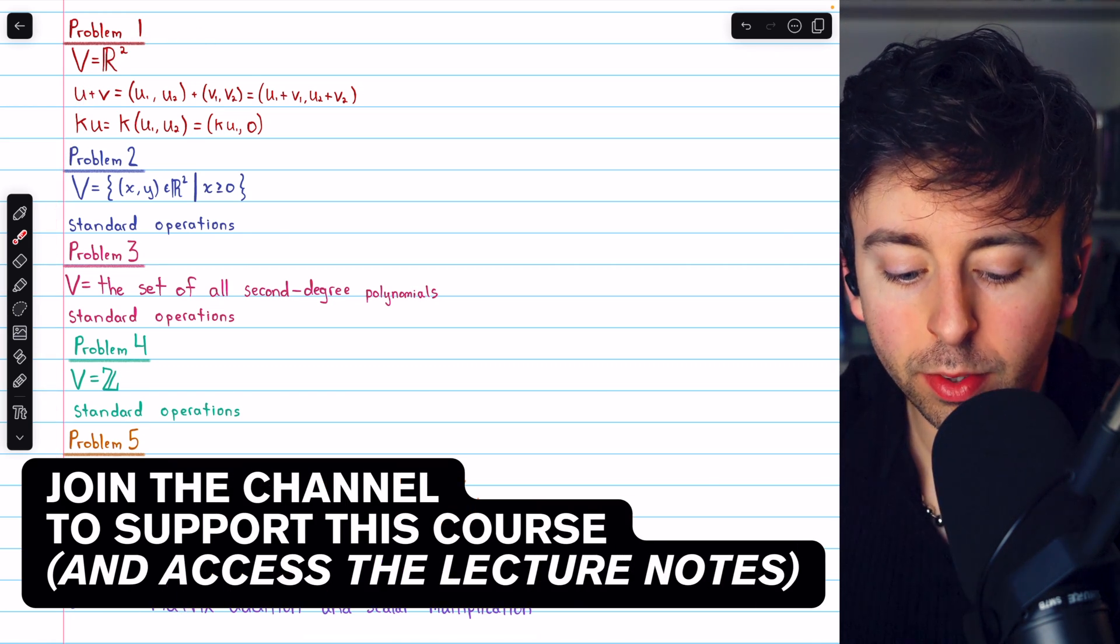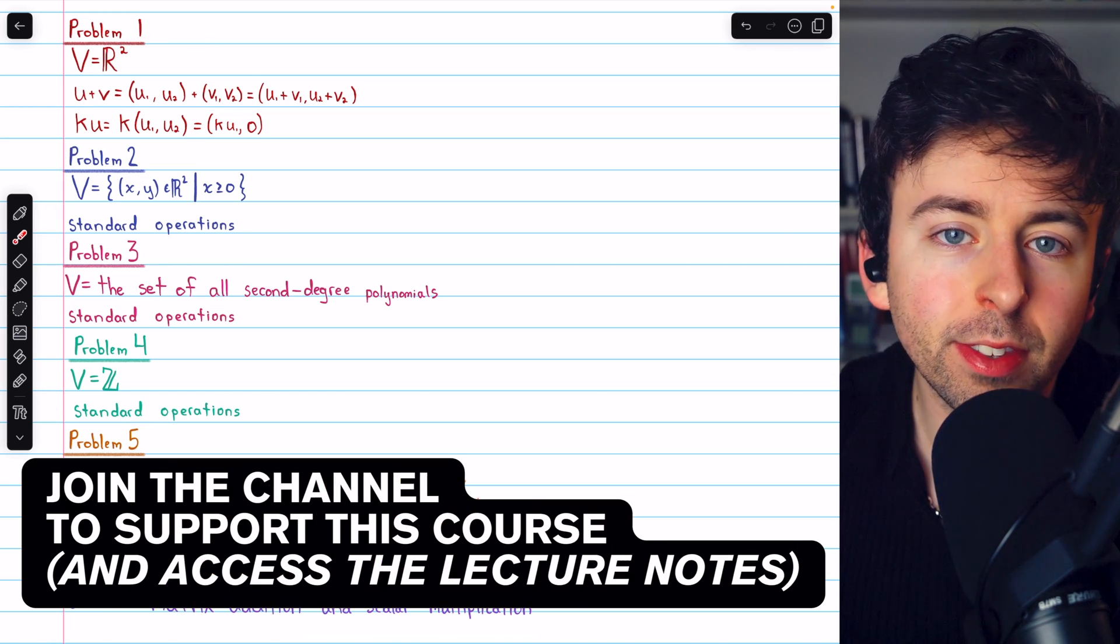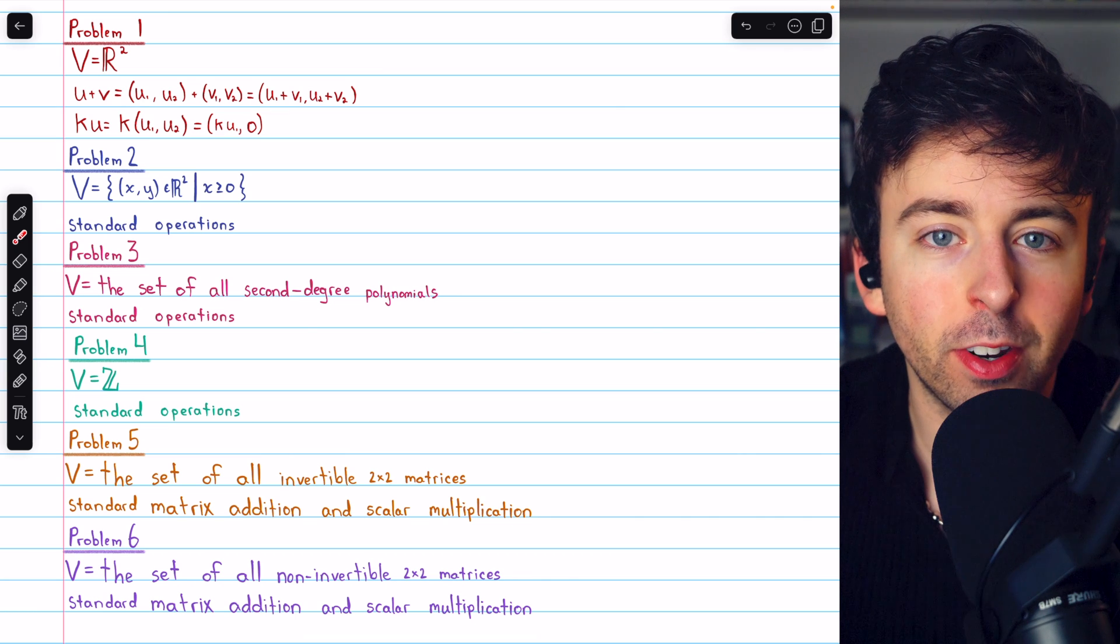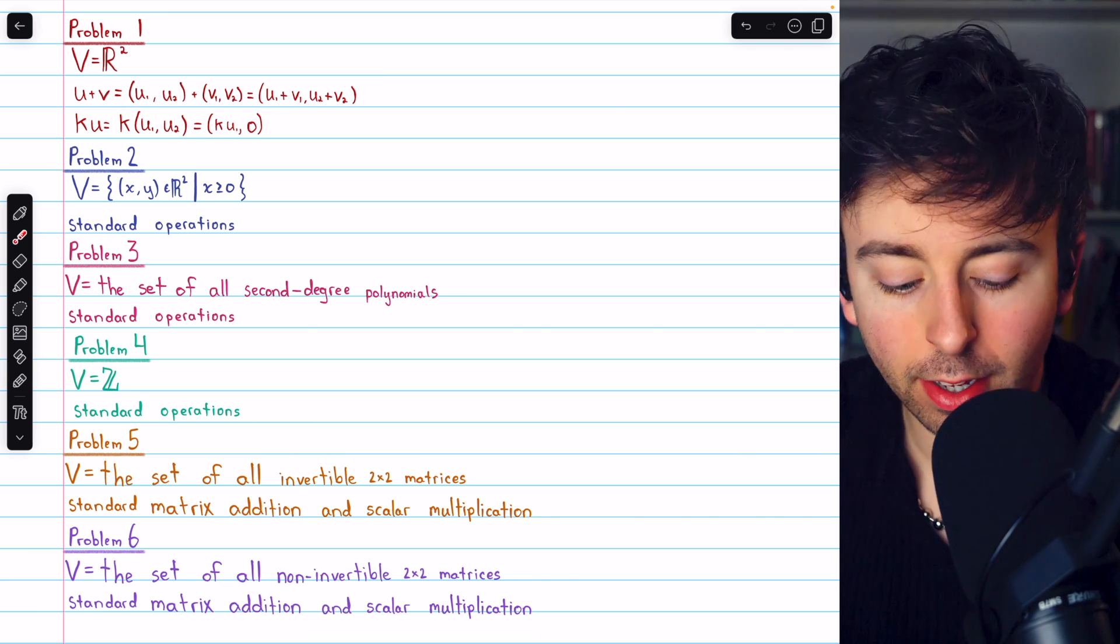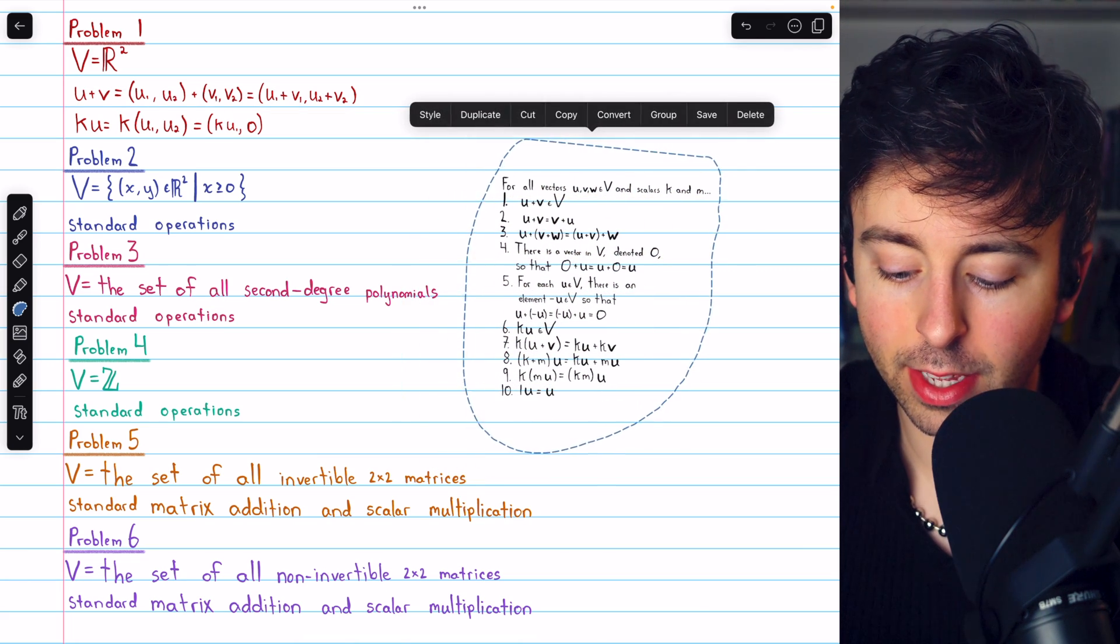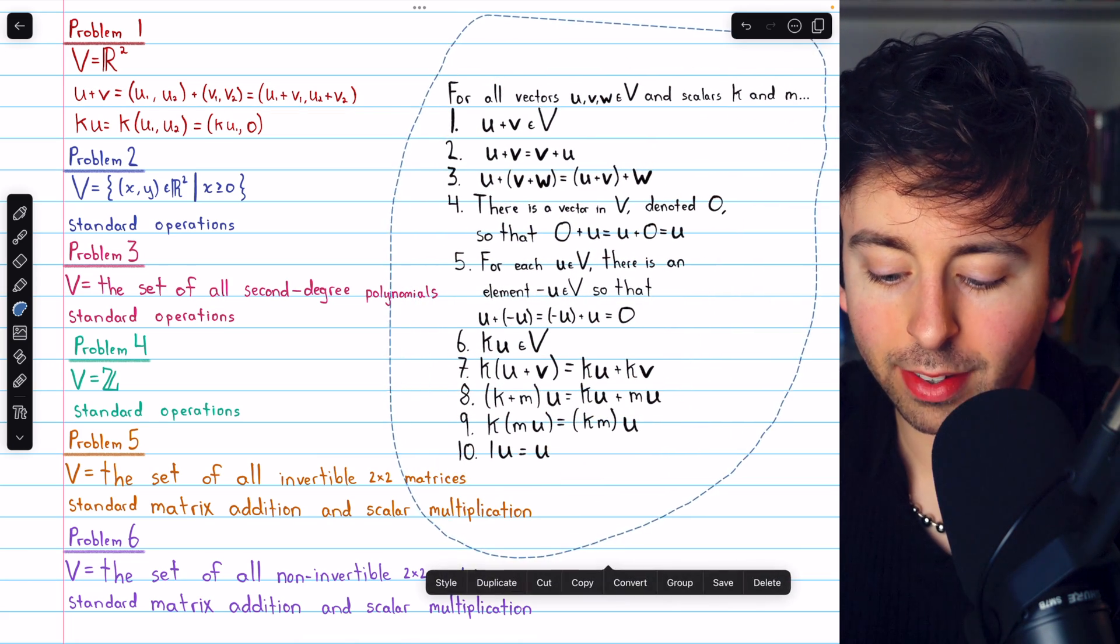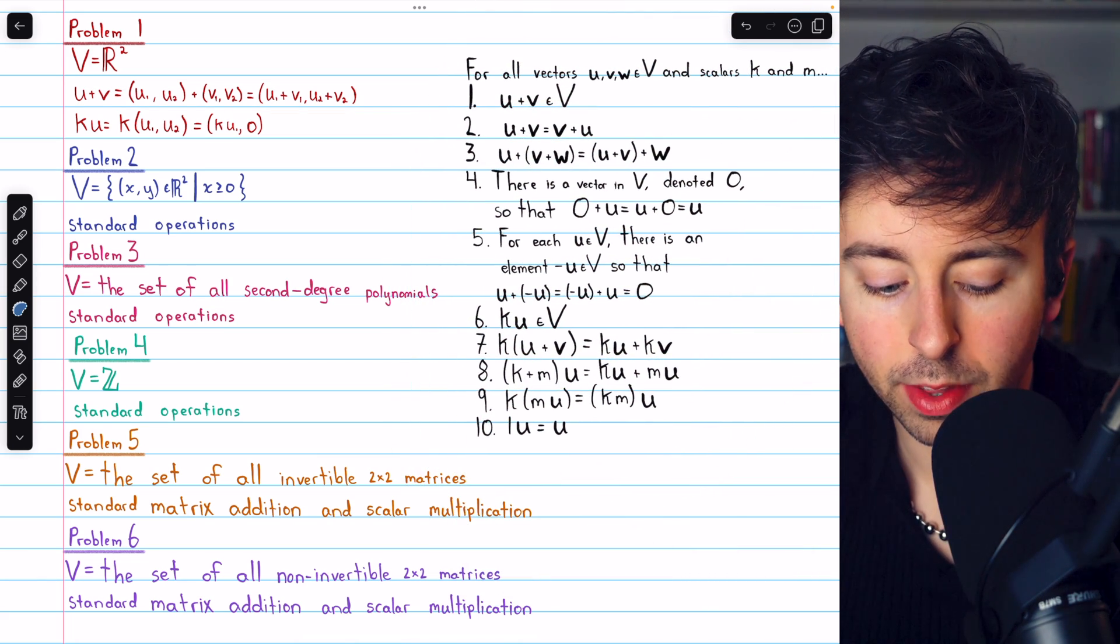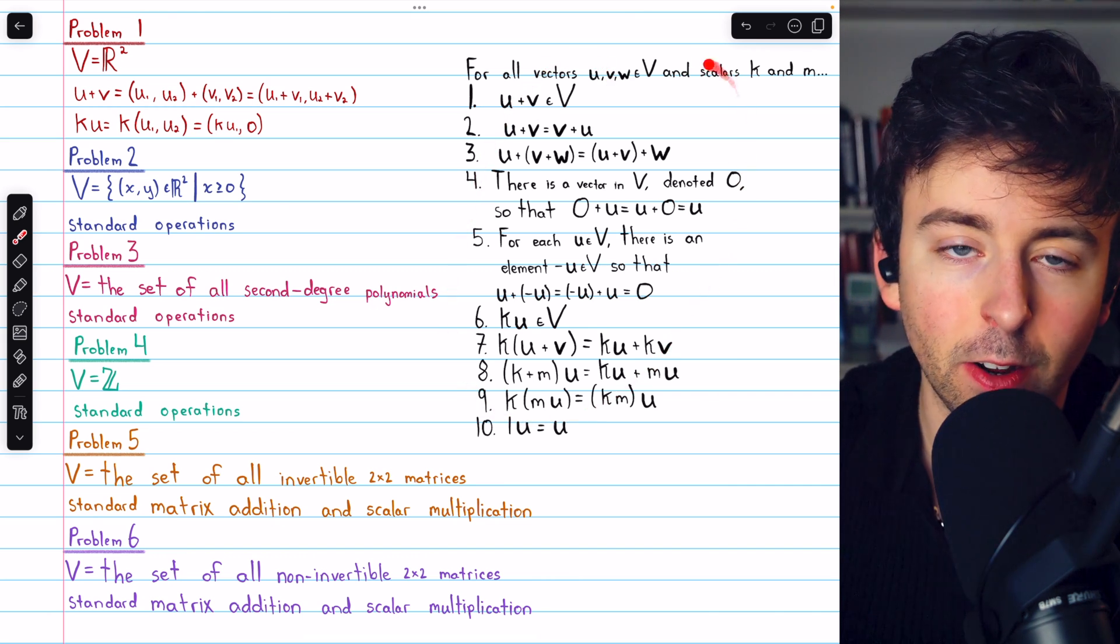We're going to do these six problems, in each case showing that the given set with the indicated operations is not a vector space. In order to do that, we'll have to show that the given set and the indicated operations do not satisfy at least one of the ten vector space axioms, which are seen here.